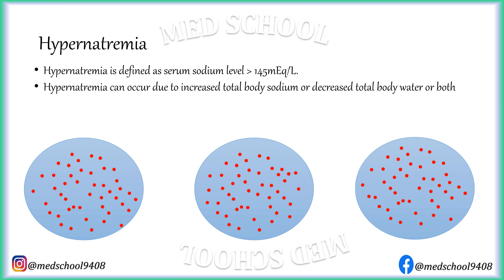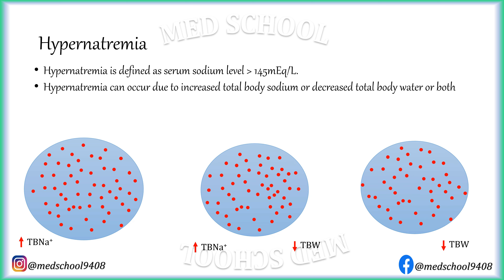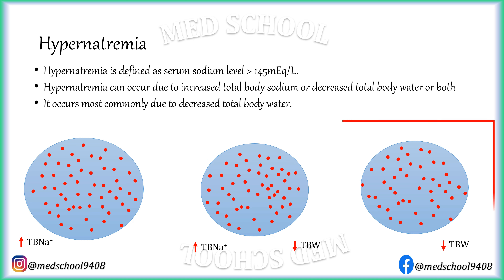Hypernatremia can occur due to an increase in total body sodium, a decrease in total body water, or both. But more often than not, it is due to a fall in total body water.